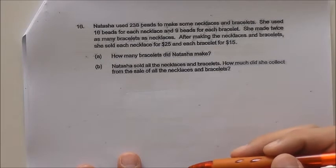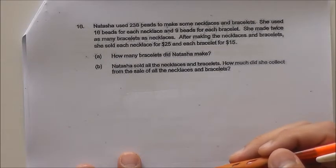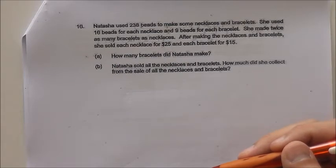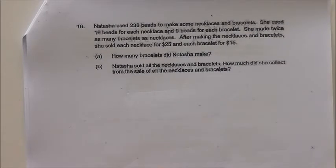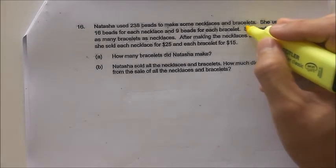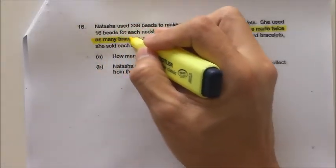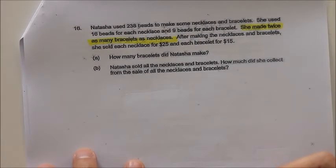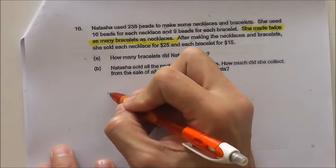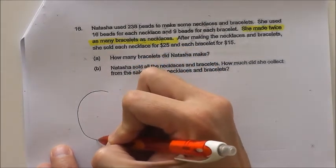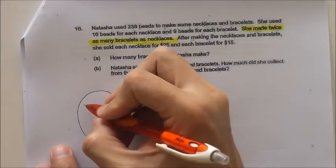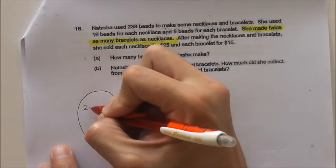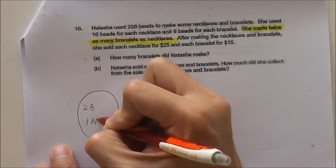This is a grouping method, because we do not know how many necklaces or bracelets Natasha made. But the key point is: she made twice as many bracelets as necklaces. So we can group them into similar groups. That means in every single group, twice as many bracelets means I should have two bracelets and one necklace.